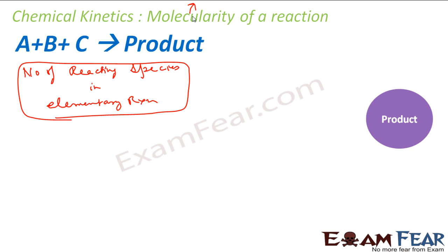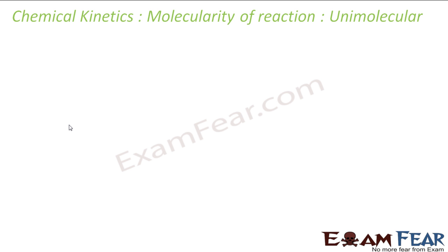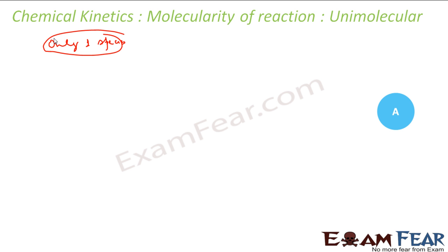In an elementary reaction, the number of species that take part tells you the molecularity of the reaction. Typically we have unimolecular, bimolecular, and trimolecular reactions. In a unimolecular reaction, only one reacting species is involved — it reacts on its own and you get a product.